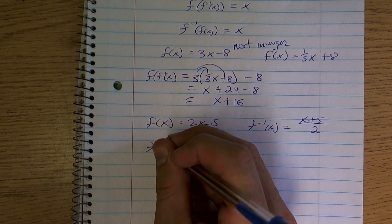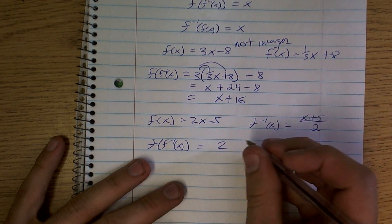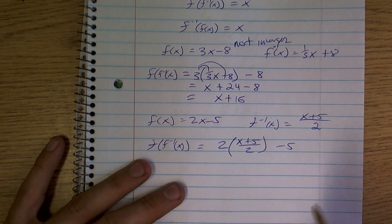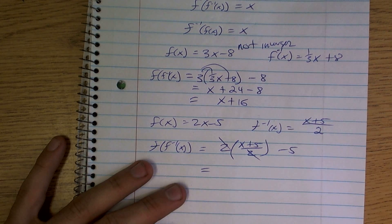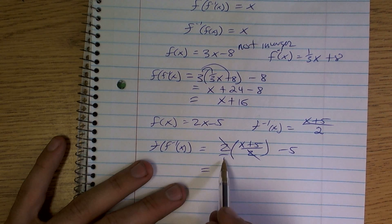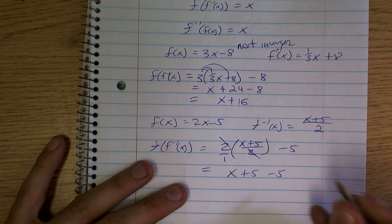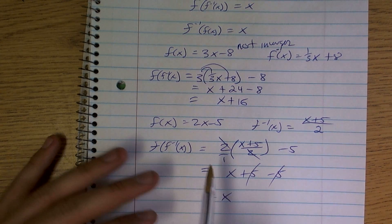So if I want to do f of f inverse of x, that's going to equal two, but rather than that, I'm just going to multiply by x plus five over two minus five. Well, now when you simplify this, your twos cancel out because that's two is a numerator over a denominator, right? So those are cancelled out. X plus five minus five, those cancel out, equals x, all right?